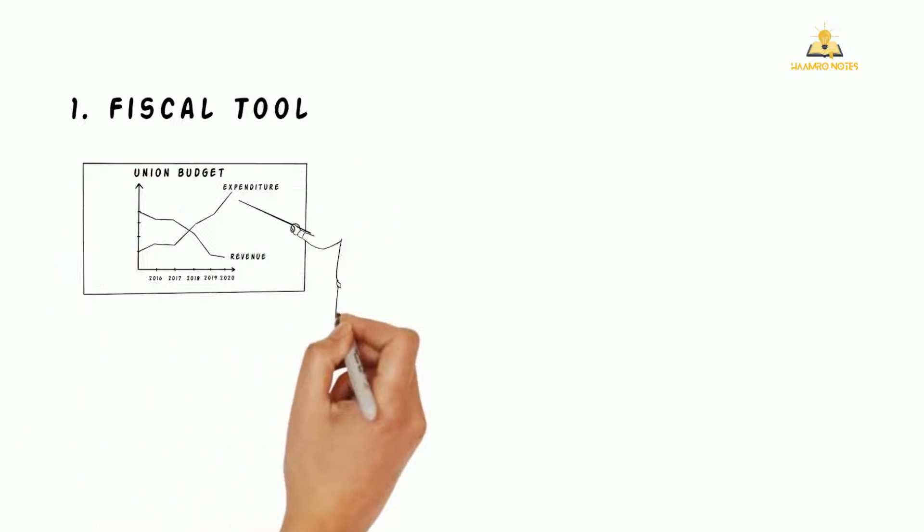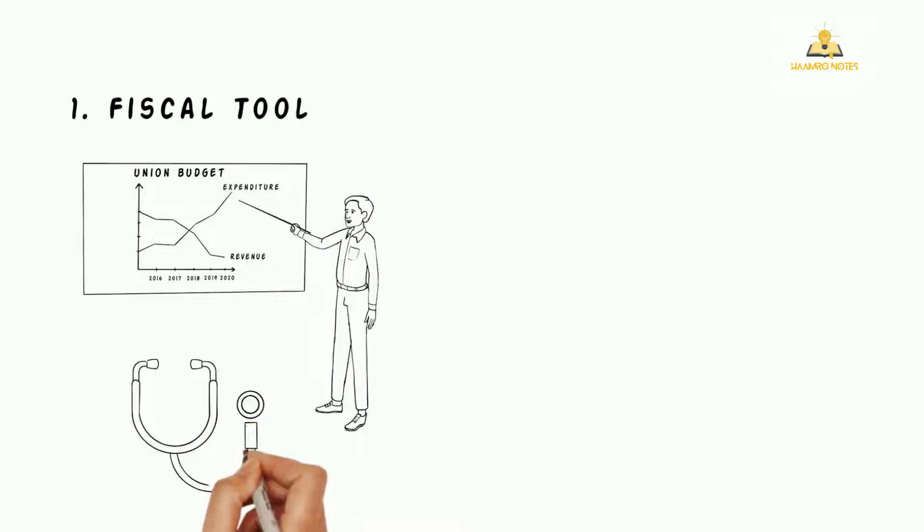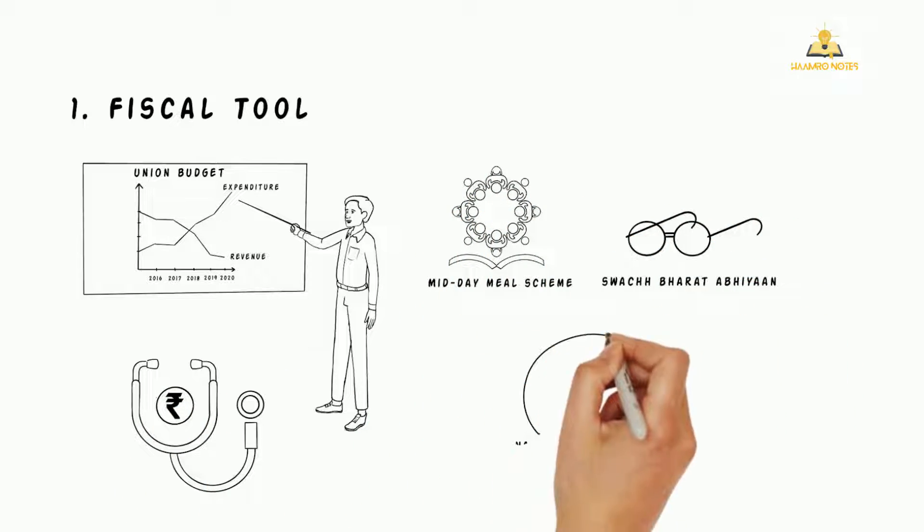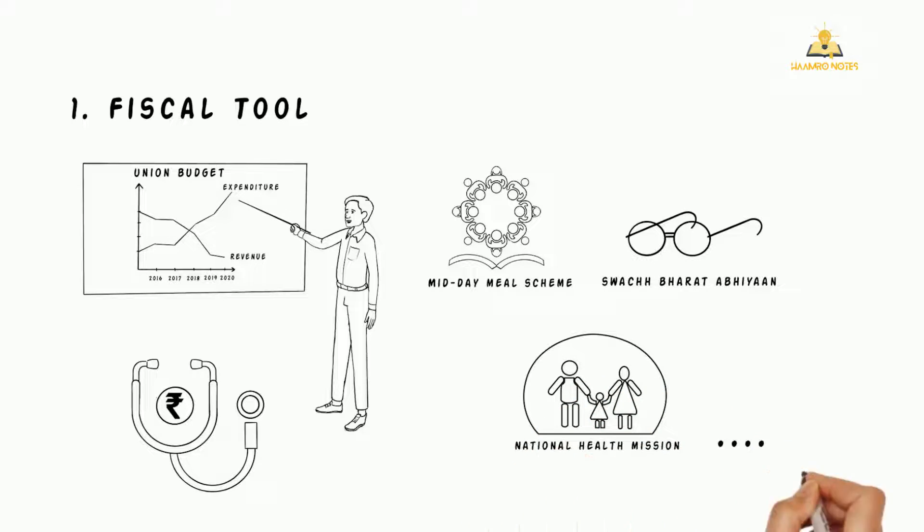The Budget allows you to study patterns in receipt and expenditure. It helps keep tab on the overall fiscal health of the Union Government and its macroeconomic challenges. This also helps in evaluating the progress made in a particular scheme, grant or government program.